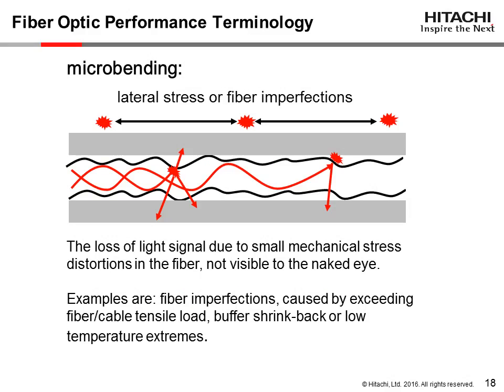Both multimode and single-mode optical fibers can have performance affected by mechanical stresses. Microbending is a loss of light signal due to small mechanical lateral stress distortions or imperfections in the fiber not visible to the naked eye. Examples are fiber imperfections caused by exceeding the fiber's mechanical proof test, a cable's tensile load, fiber stress caused by buffer shrink back, or fiber stress caused by contraction when subjected to low temperature extremes.